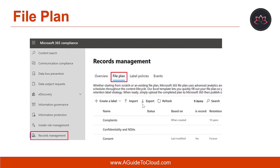Let's talk about file plan. Although you can create and manage retention labels from information governance in Microsoft 365 Compliance Center, the file plan from records management has additional management capabilities. You can bulk create retention labels by importing the relevant information from a spreadsheet. You can export information from existing retention labels for analysis and offline collaboration or for bulk editing. File plan descriptors support additional and optional information for each label, and file plan can be used for all retention labels, even if they don't mark content as a record.